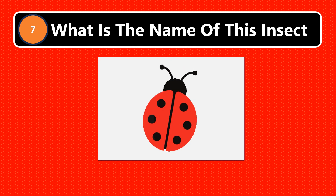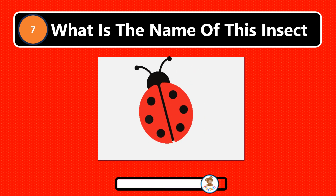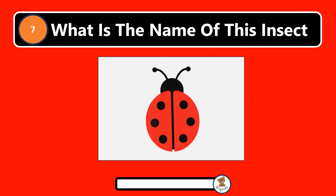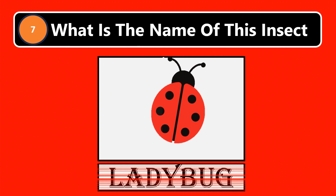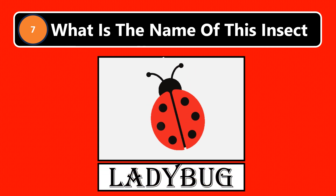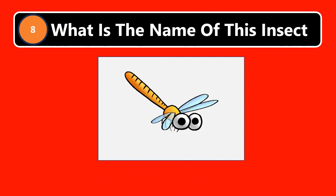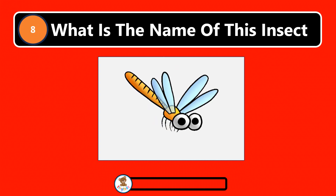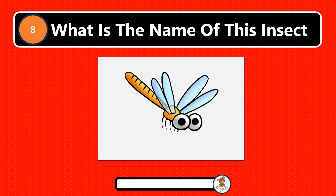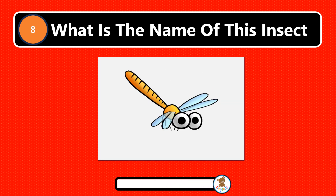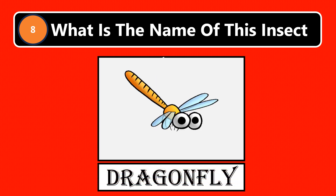What is the name of this insect? Slug. What is the name of this insect? Slug. Dragonfly.